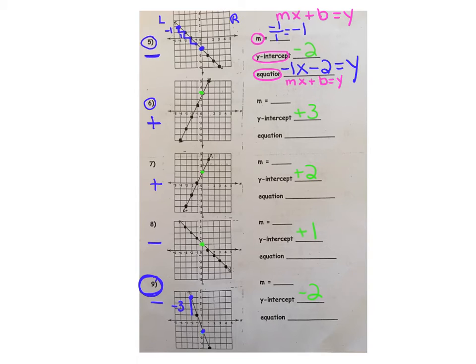That gives us a negative three for our delta y. To the right, one. Down three. To the right, one. Down three. And to the right, one. It's consistent. We get negative three over one, which is the slope of negative three. Put it all together in an equation. Negative three times x minus two equals y.